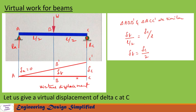Now let us give a virtual displacement of delta_C at C. The beam will deflect as shown — A, B', C'. We form two similar triangles: triangle one is A-C-C' and triangle two is A-B-B'. At point C the displacement is delta_C, and at point B the displacement is delta_B.